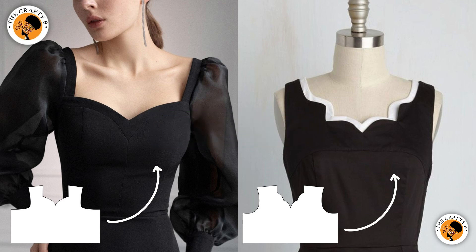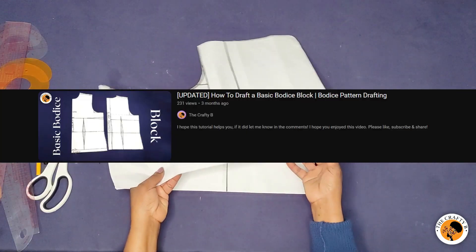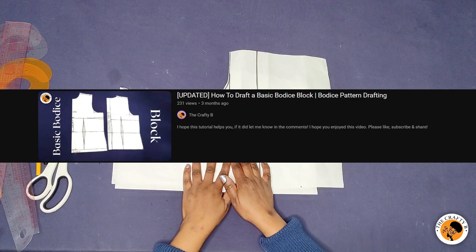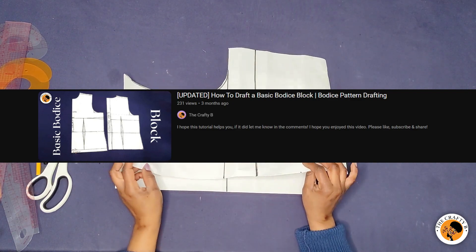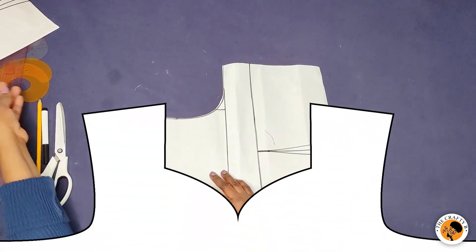So let's get right into the video. The first, I have two basic half scale bodice patterns in front of me here for the two separate necklines. So we are starting with the sweetheart neckline.